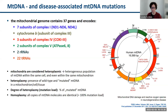Patients with Leber's hereditary optic neuropathy usually harbor 100% pathogenic mitochondrial DNA point mutations in complex 1 subunits. The biochemical threshold effect is very important for manifestation of mitochondrial diseases. The threshold effect means that a biochemical manifestation — for example, a COX (complex 4) deficiency — occurs when the level of a pathogenic mitochondrial DNA variant exceeds a specific threshold of mtDNA heteroplasmy, with this threshold varying between tissues and between different mtDNA variants. Different variants may have different thresholds, which can be characterized by single fiber analysis.